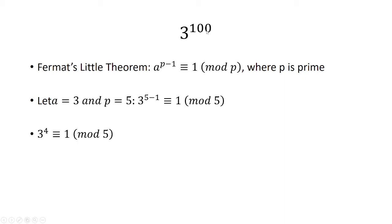If we want to get this to 3 to the 100th, I have to raise 3 to the 4th to the 25th power. When I do that, I also have to raise 1 to the 25th power. 1 to the 25th power is just 1, and 3 to the 4th raised to the 25th power is 3 to the 100th. So we see that 3 to the 100th is congruent to 1 mod 5.